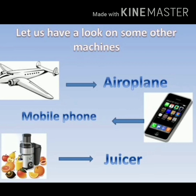Aeroplane se hum ek place se dusre place, ek country se dusri country mein pahunch jate hai. Second, mobile phone — yeh toh sab ko pata hai kis liye hota hai. Mobile phone se hum kitne saare kaam ghar baithe easily kerte hai. Third, juicer mein kya hota hai? Fruits mein rakhha aur fata fata se uska juice nikalta hai. Yeh bhi kaam jaldi hota hai. Toh machine kya kerti hai? Humara time bachati hai, koi bhi kaam ko fast aur easy way mein kerti hai.